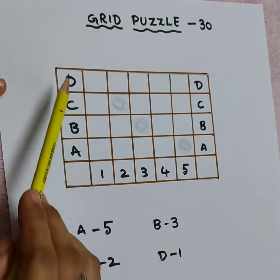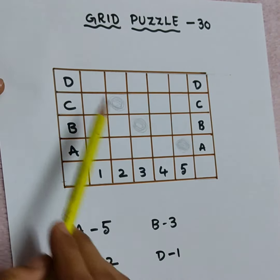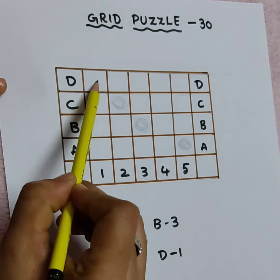Next, D, 1. D is here, 1 is here. So D, 1.